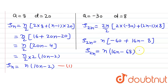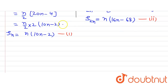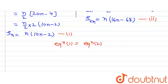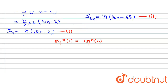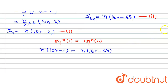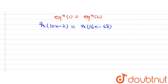The question says that the sum of n terms of the first AP equals the sum of 2n terms of the second AP, meaning equation 1 equals equation 2. So we equate them: n times (10n minus 2) equals n times (16n minus 68). The n cancels out on both sides, giving us 10n minus 2 equals 16n minus 68.